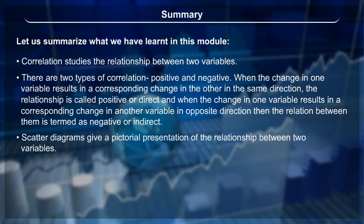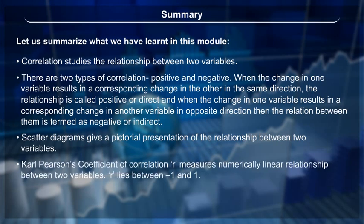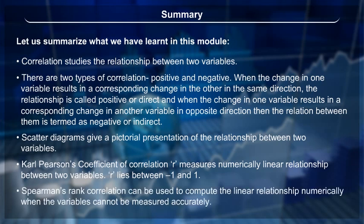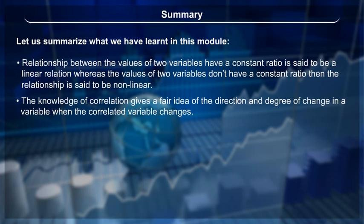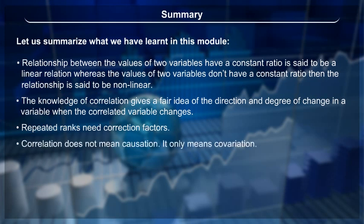Carl Pearson's coefficient of correlation R measures numerically the linear relationship between two variables, and R lies between -1 and 1. Spearman's rank correlation can be used to compute the linear relationship numerically when variables cannot be measured accurately. A linear relation exists when two variables have a constant ratio; otherwise it is non-linear. Correlation does not mean causation — it only means covariation. Repeated ranks need correction factors.